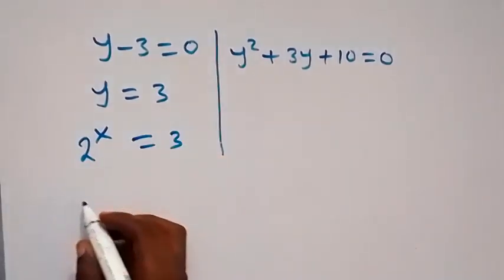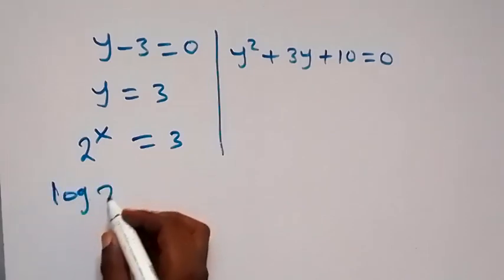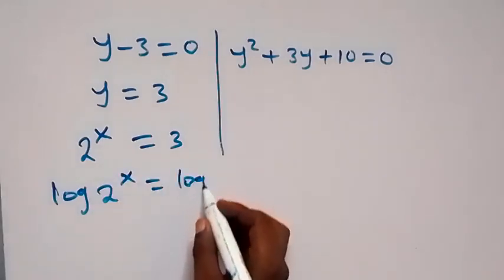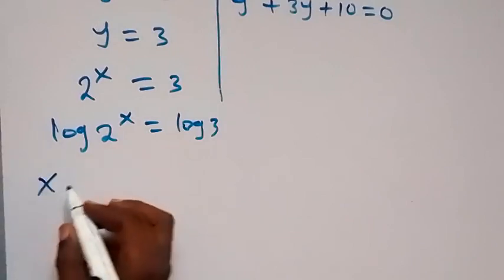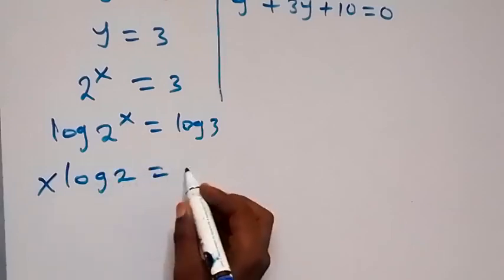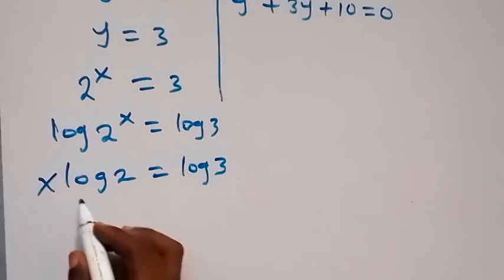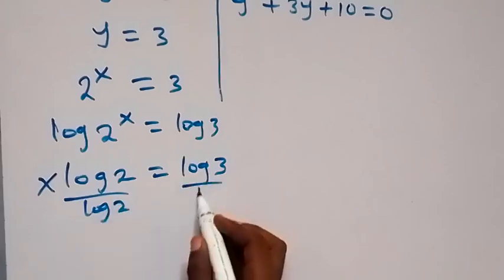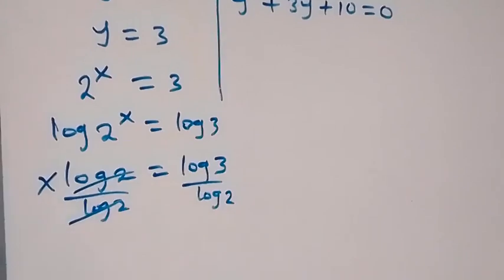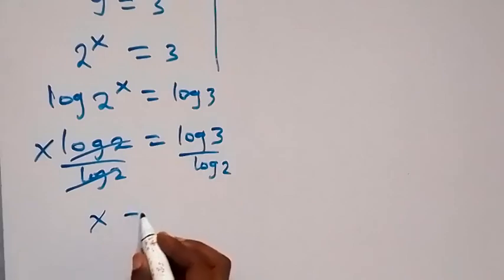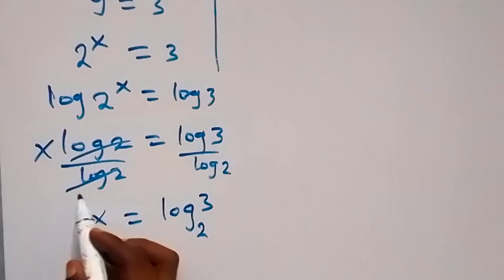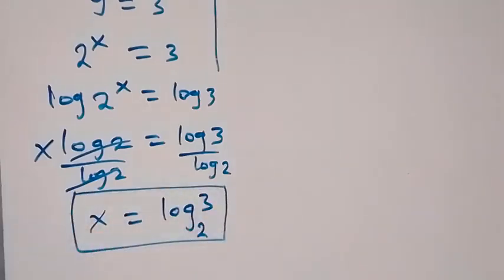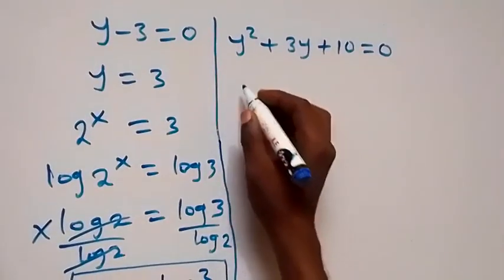From here we take the log on both sides: log of 2 raised to power x equals to log 3. We apply the power law of logarithms, bringing x to the front: x log 2 equals to log 3. Dividing both sides by log 2, the log 2 cancels and we have x equals to log 3 over log 2, which we can write as log 3 base 2 by the change of base rule.